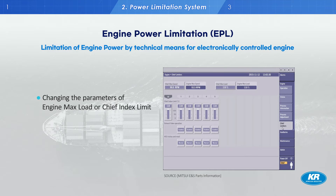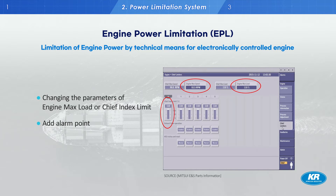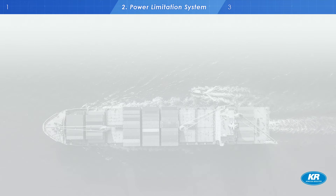Therefore, for an electronically controlled engine: first, change the parameters in the ECU to meet the power limit target, then set a password; second, add an alarm point for when an unlimiting action is applied in an emergency situation.